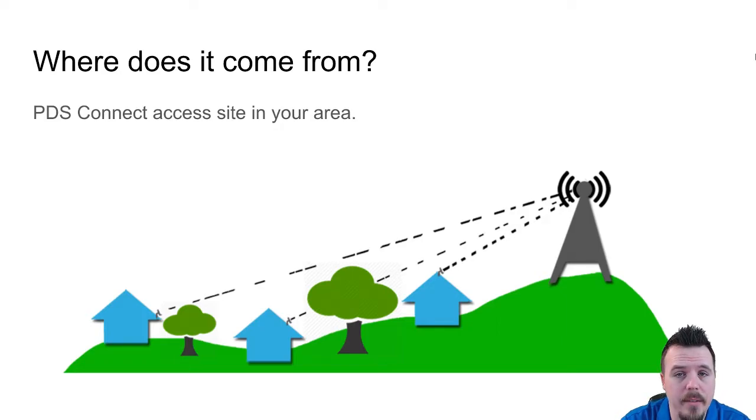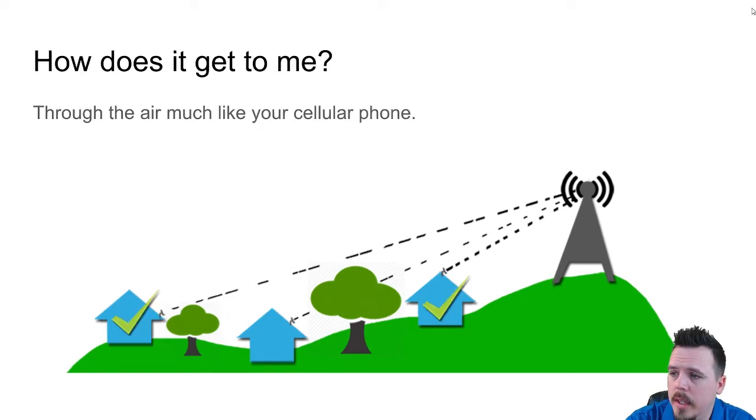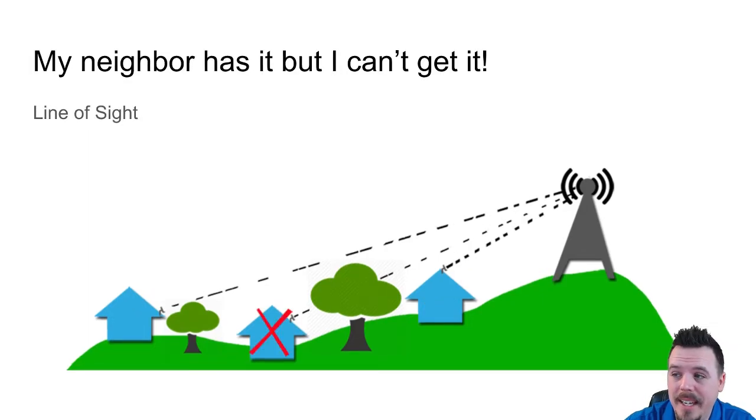Next thing is how does it get to me? Well it goes through the air a lot like your cell phone does, it just uses different wireless frequencies to get there. So you can see in this image you have a couple houses here that are connected, and then you see one in the middle doesn't have a check box. 'My neighbor can get it but I can't.' Well the problem is that that middle house does not have a line of sight to the tower.